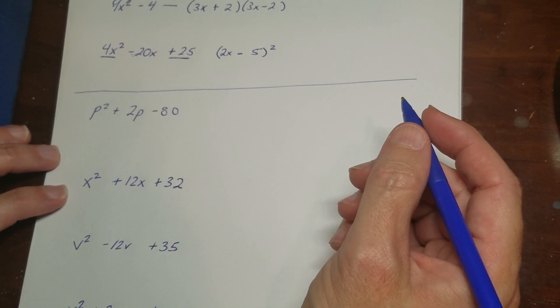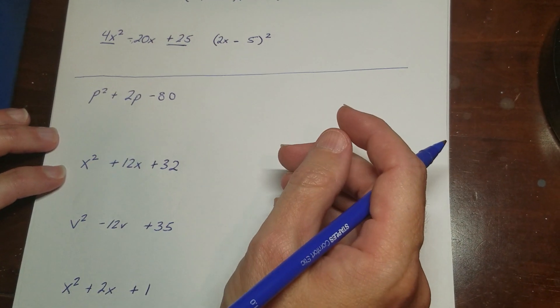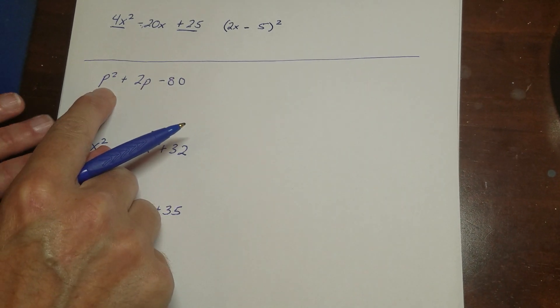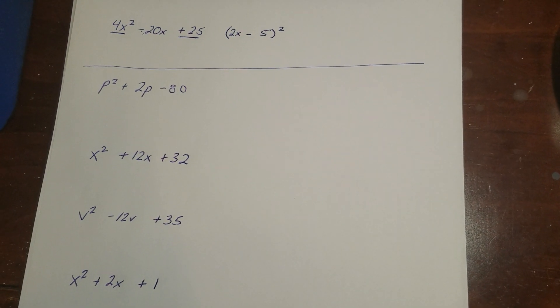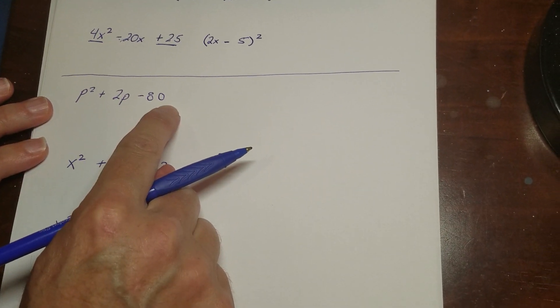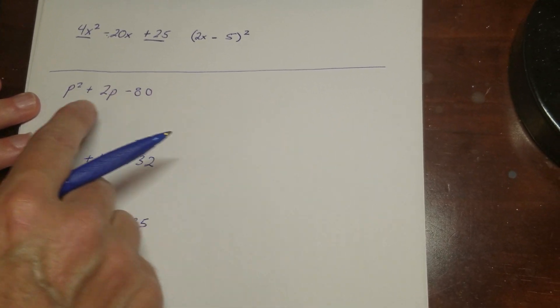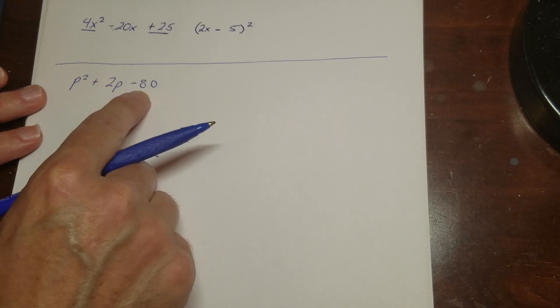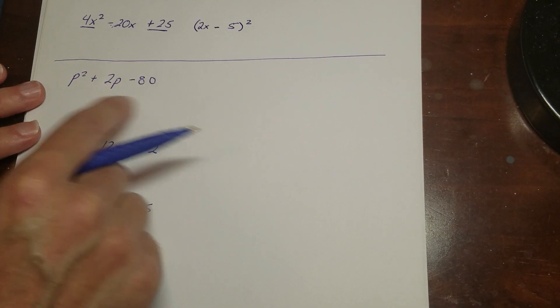So what we're going to do is talk about ones that don't look like this. So if I look at this one here, p² + 2p - 80, well, it's definitely not a difference of squares because it's a trinomial. It's definitely not a perfect square because although p² is a perfect square, 80 is not. So I have to do this a different way.